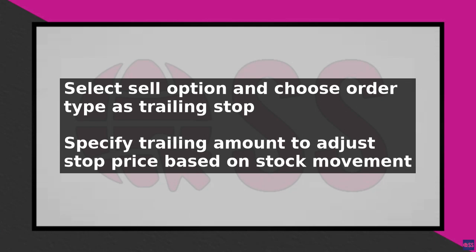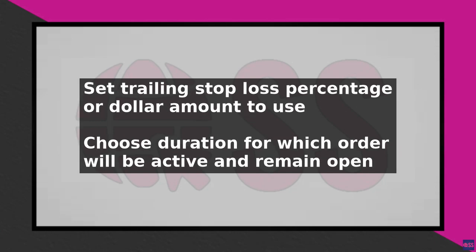If the stock price rises, the stop price will also rise, but if the stock price falls, the stop price will remain the same. To set the trailing amount, enter the percentage or dollar amount you want to use, and then select the duration for which the order will be active. You can choose from a variety of durations, including good till cancelled, which means the order will remain active until it is filled or cancelled.